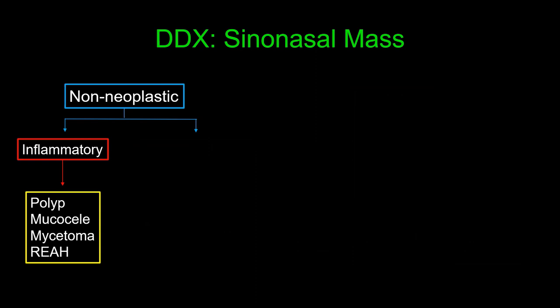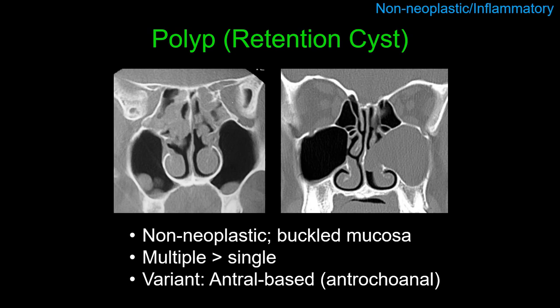We'll start with the inflammatory non-neoplastic category, looking at polyps, mucoceles, mycetomas, and an interesting entity called REAH. Polyps are extremely common, representing the majority of sinonasal masses, indistinguishable on imaging from retention cysts. They are a reaction to allergens and inflammation, often in patients with repeated bouts of rhinitis, representing heaped up mucosa with water-like substance beneath them — imaging like water on MR. They are more commonly multiple than single, and multiple sinonasal masses in the vast majority of cases represent polyposis.